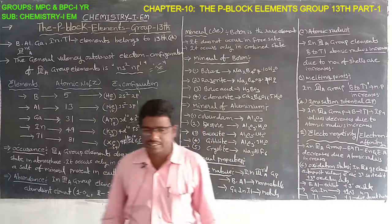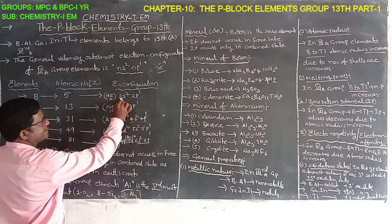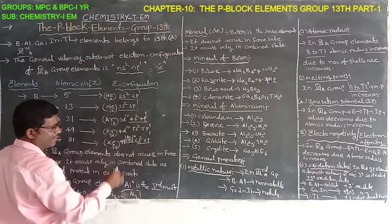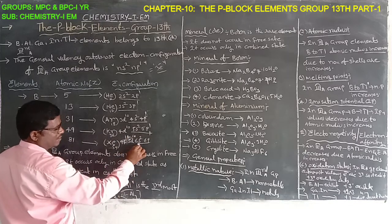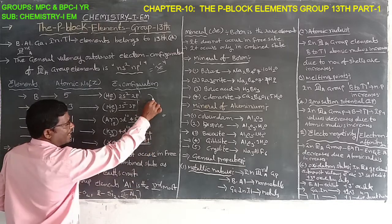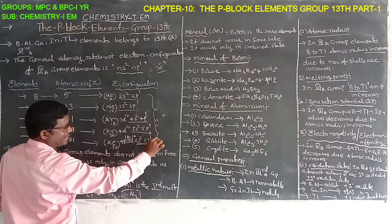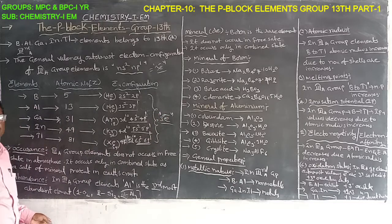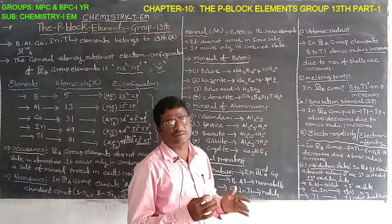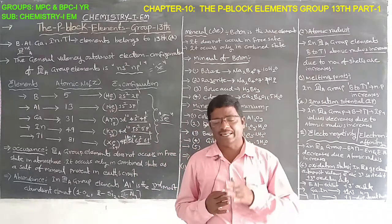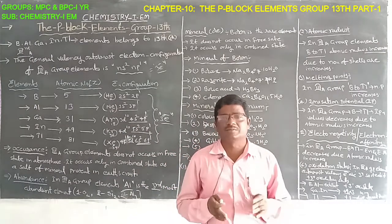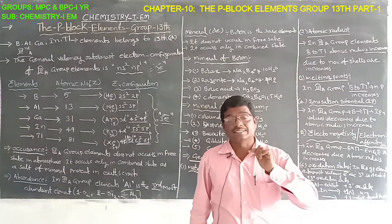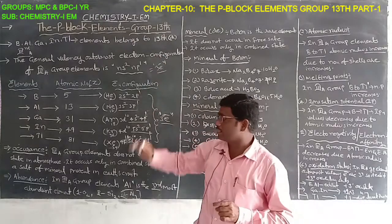In 3rd A group elements, all elements have the following outermost valence configurations: Boron 2S², 2P¹; Aluminium 3S², 3P¹; Gallium 4S², 4P¹; Indium 5S², 5P¹; Thallium 6S², 6P¹. All elements have 3 outermost valence electrons — equal to the group number (3rd A or 13th group).